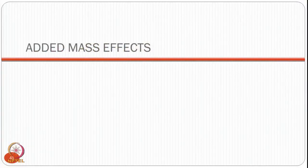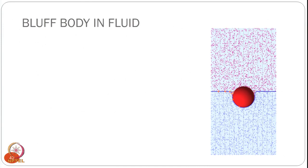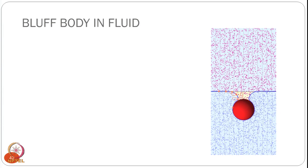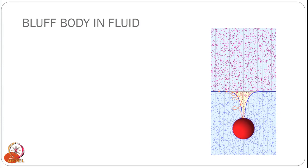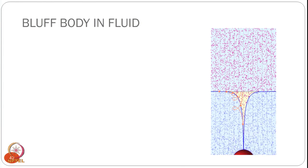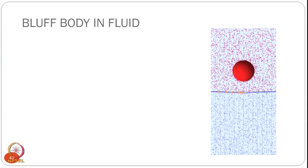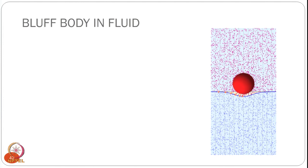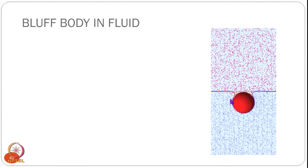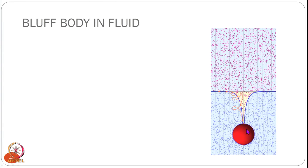So what exactly are added mass effects? Let us look at this bluff body moving in a fluid. This red colored ball is moving from the pink colored section to the blue colored section. You can think of those pink regions as fluid particles. When the ball is moving, it is actually displacing some of those particles — the pink particles have entered the blue region. That is a complete displacement of particles from one portion to the other.